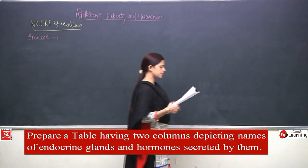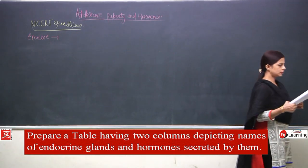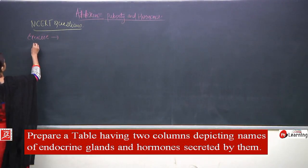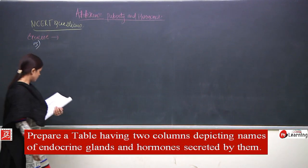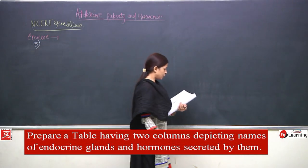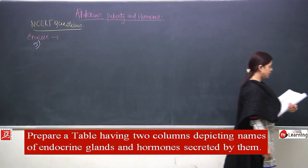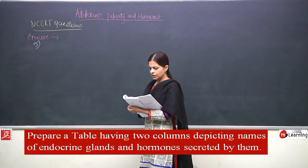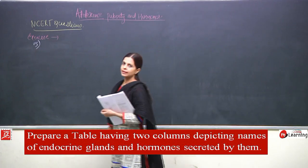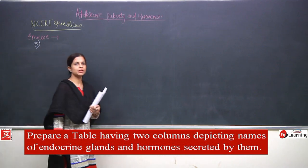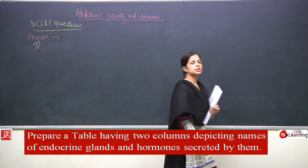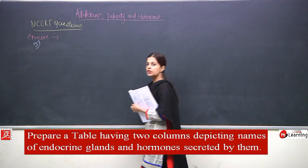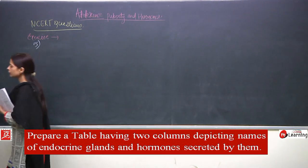Now we will talk about the next question - question number five. The question is to prepare a table having two columns, where we are supposed to write the endocrine glands and the hormones which are secreted by the particular endocrine gland. So, write down the name of the endocrine gland and also the name of the hormone secreted by that particular gland.